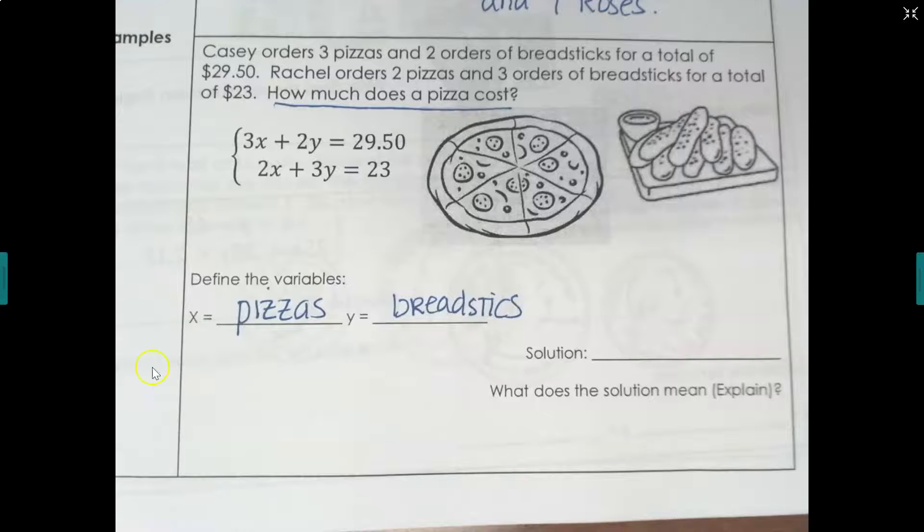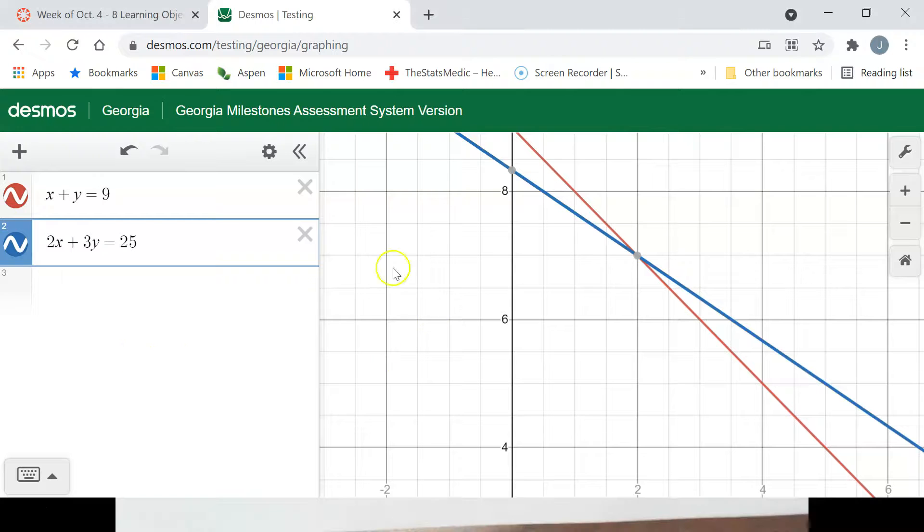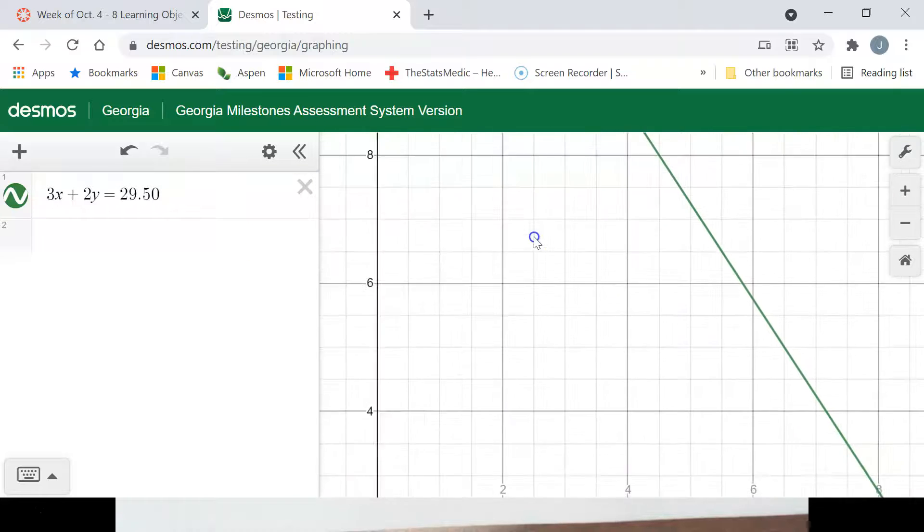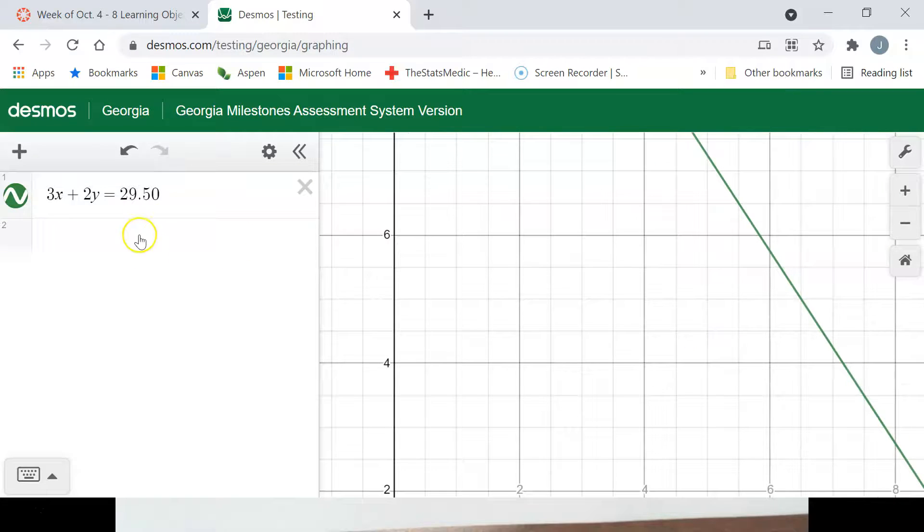All right, so let's go take a look at our Desmos. We'll go ahead and x out what we've already done and put in the new equations. So we have 3x plus 2y is going to equal $29.50. And I'll move this so we can kind of, well, we're not sure where we're going to need to see it yet. So let's try our other one. So we have 2x plus 3y is going to equal $23.